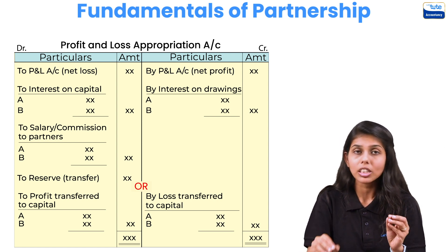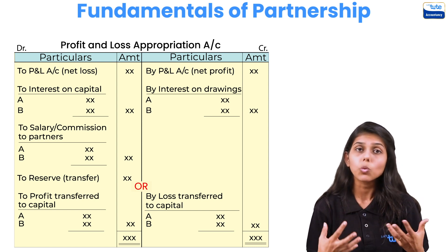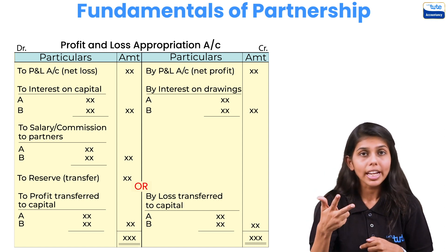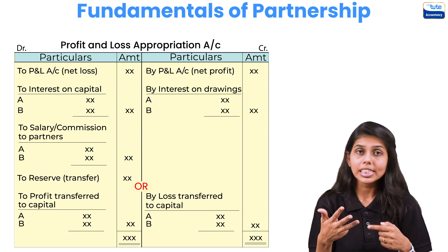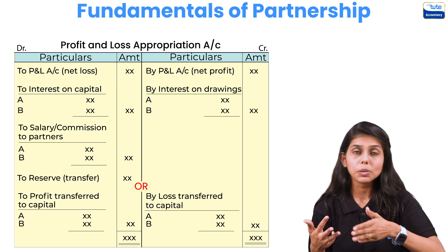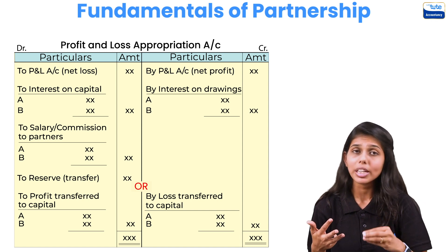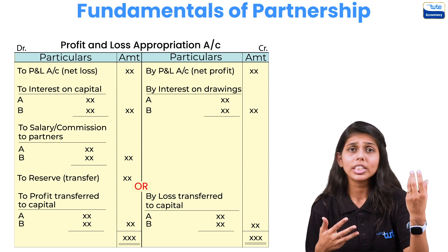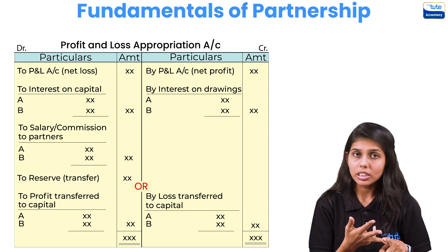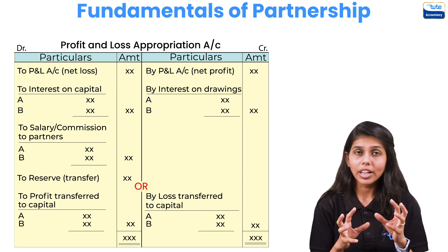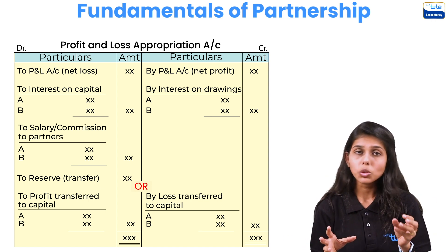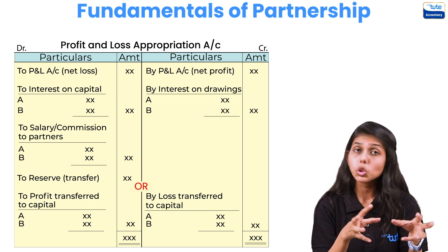These are all the items of the P&L Appropriation Account — it's very important as questions are frequently asked on it. Take net profit from P&L, add interest on drawings as income, debit interest on capital as expense. Salary or commission need not be payable to all partners — only to those specified in the question. Provide for any transfers to reserves, and finally distribute the balancing net profit or net loss between the partners.